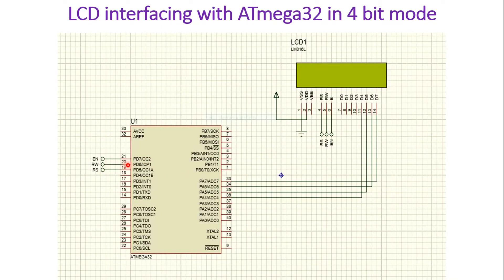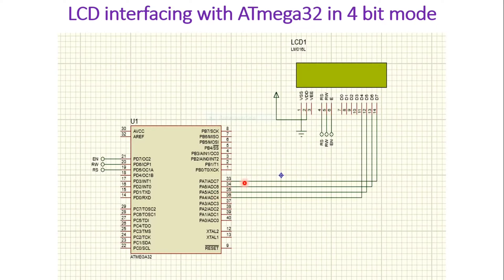The RS pin is connected to PD5, RW is connected to PD6, and Enable is connected to PD7 of the microcontroller. Since the LCD is connected in 4-bit mode, only data lines D4 to D7 are used: D4 to PA4, D5 to PA5, D6 to PA6, and D7 to PA7. D0 to D3 are not used. In 8-bit mode you would need to connect all of D0 to D7, using 4 more microcontroller pins — so 4-bit mode saves pins for other peripherals.